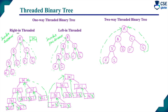For node H: right link connects to in-order successor D. For node I: left link connects to in-order predecessor D, right link connects to in-order successor B. For node F: left link connects to in-order predecessor A, right link connects to in-order successor C. For node G: left link connects to in-order predecessor C, right link has no in-order successor so it connects to the root node.